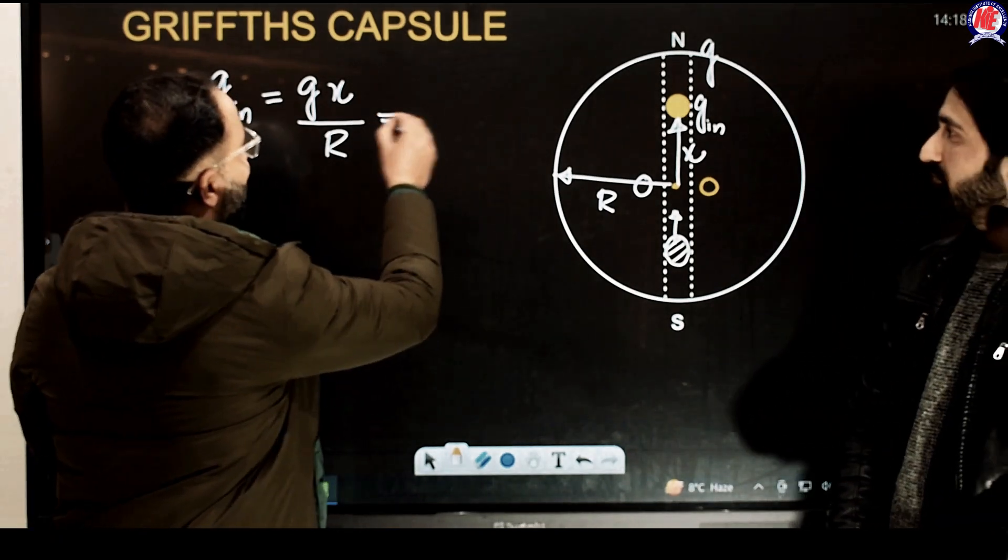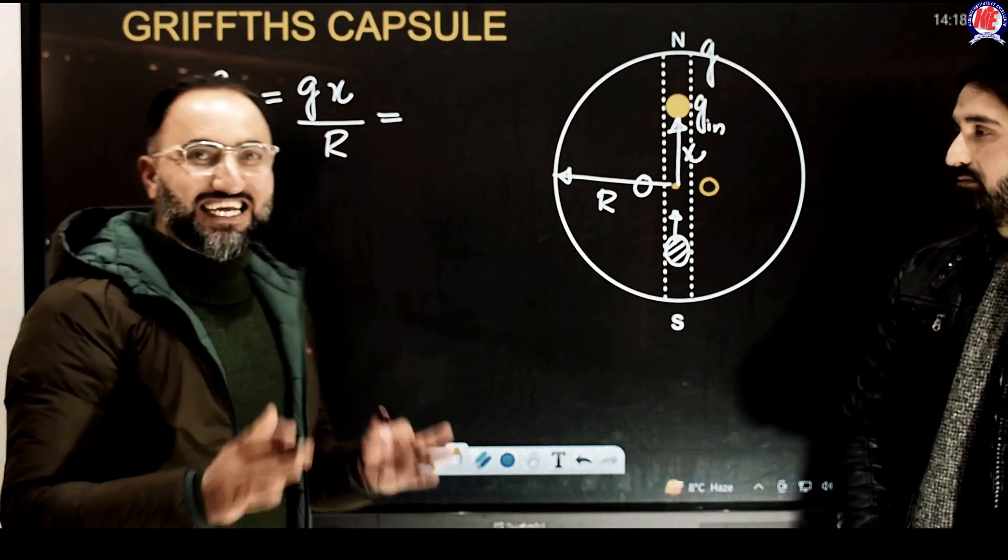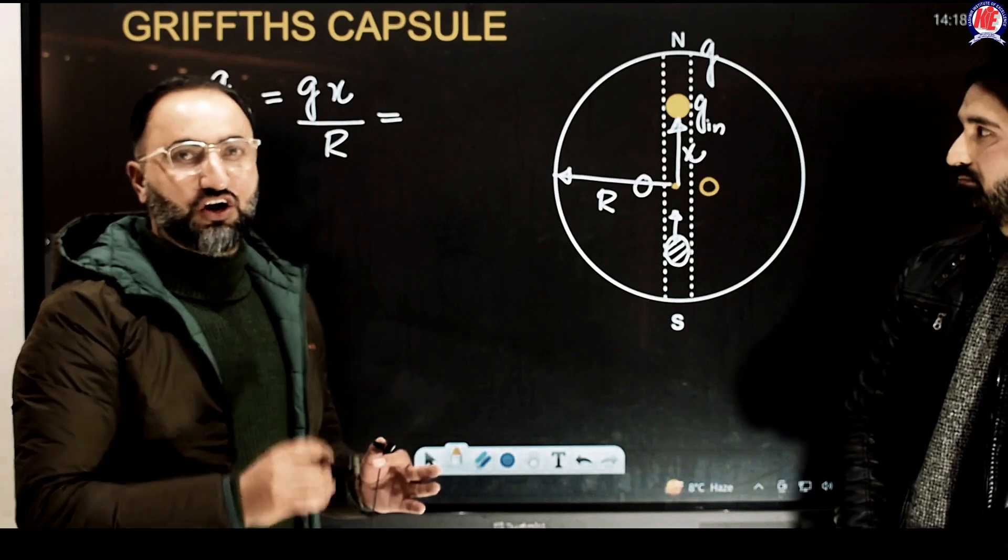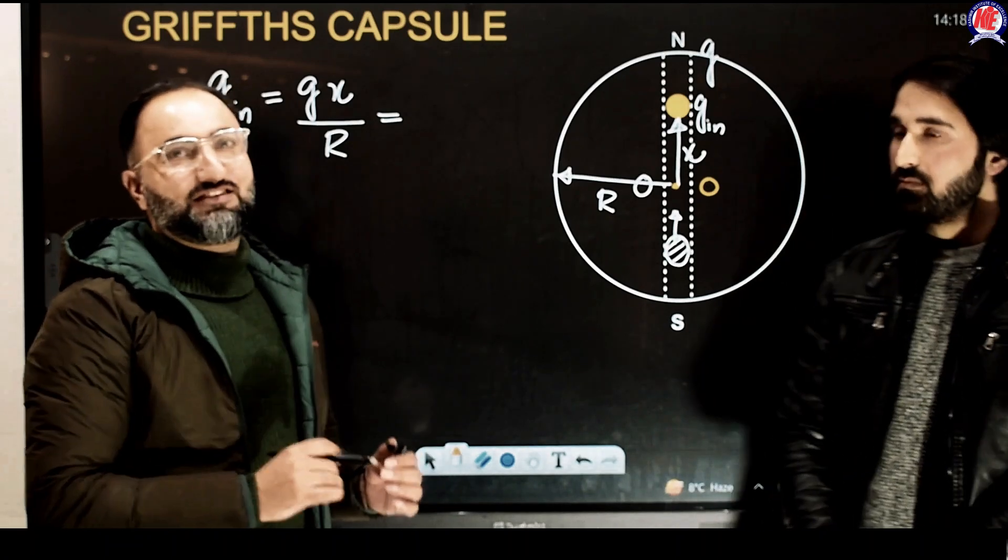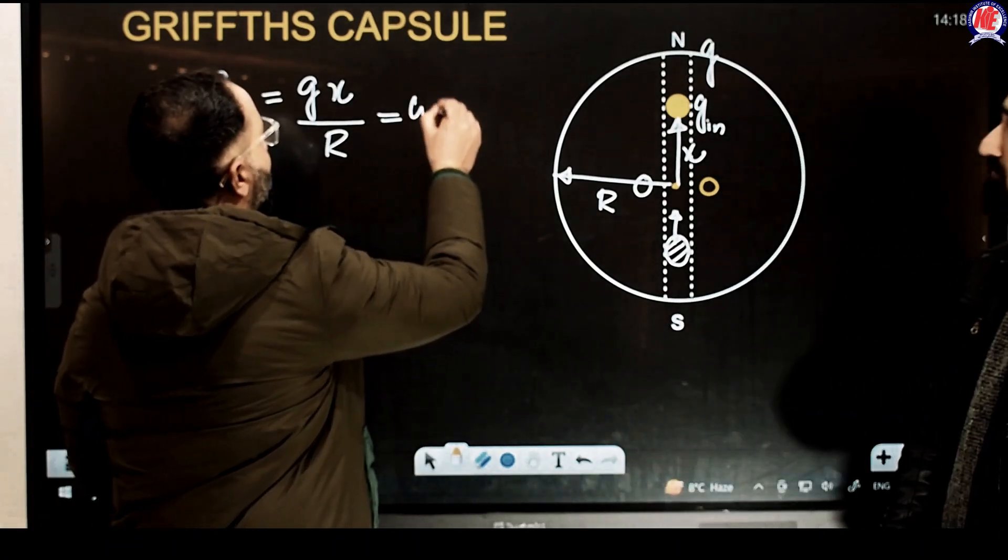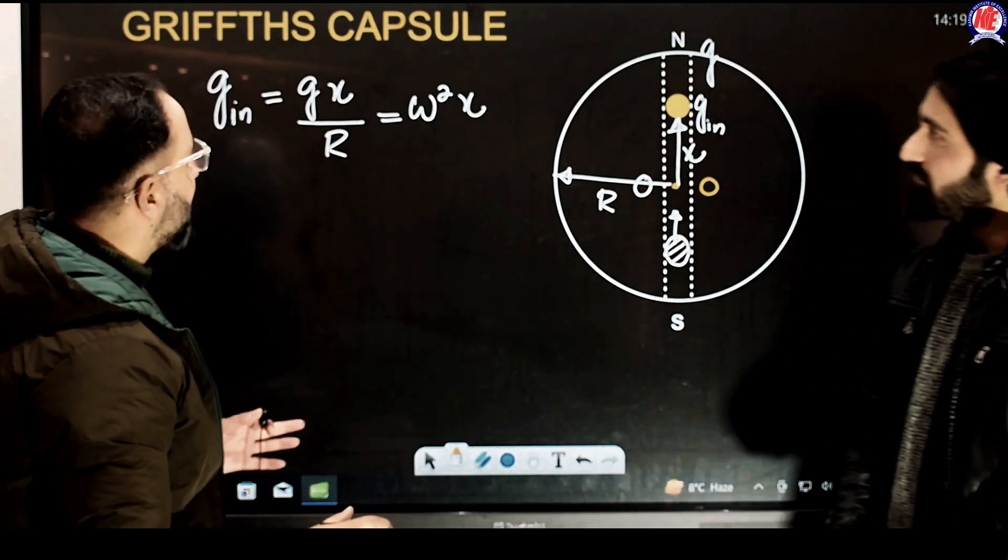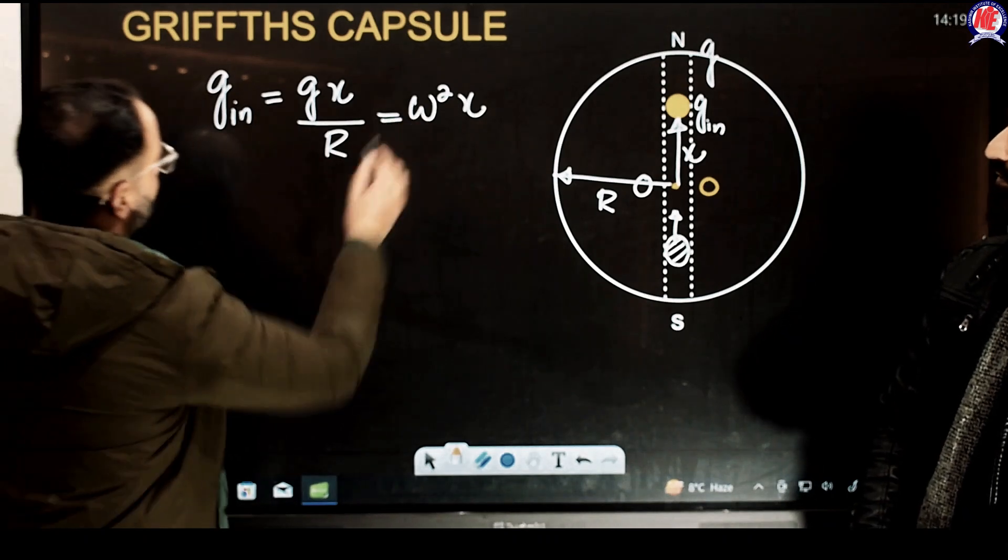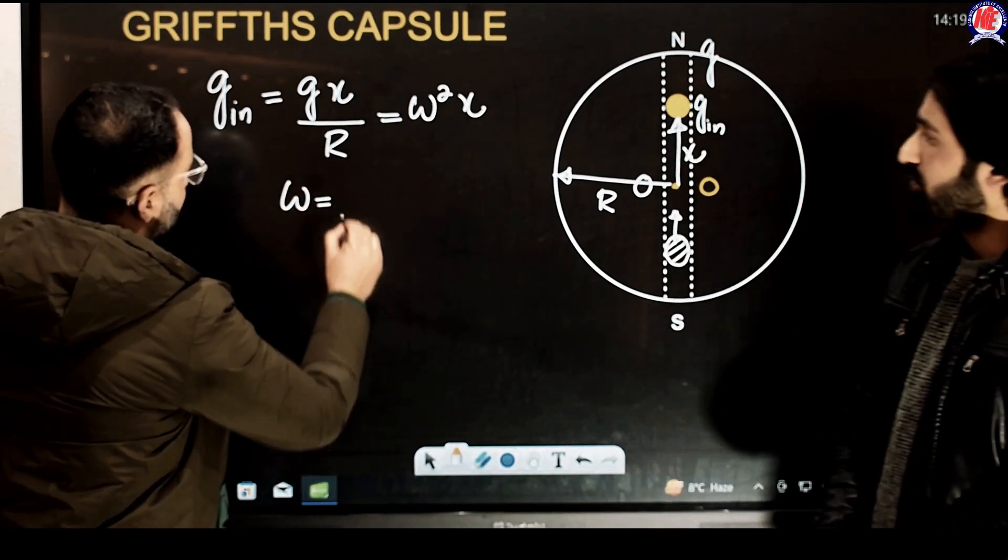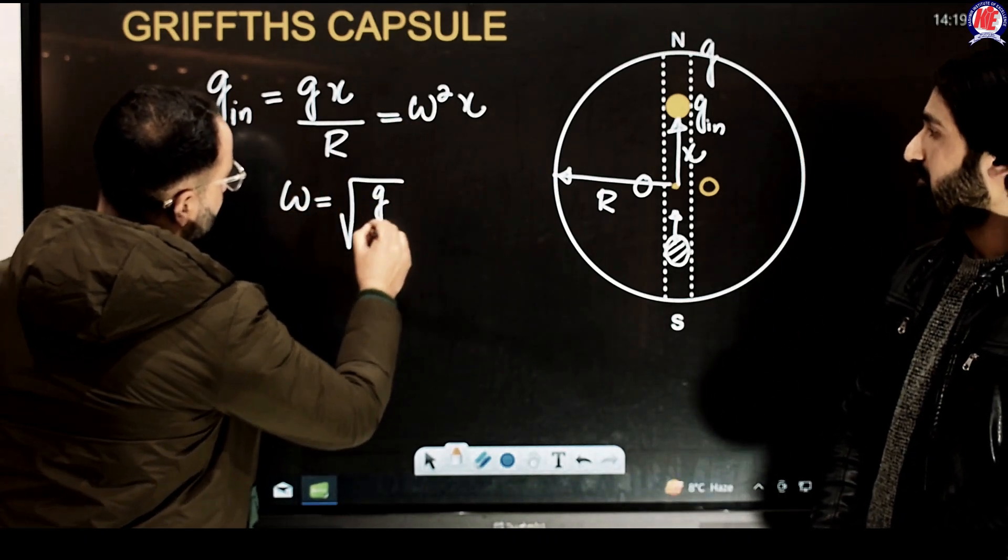What I am going to write is this. The generalized equation for the linear SHM, acceleration of a particle executing linear SHM is this: omega square multiplied x. The problem is done and dusted. x and x is going to cancel. We are left with omega. So what omega will be? It will be equal to root of g divided by r.